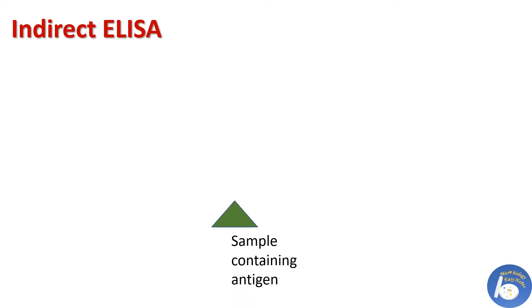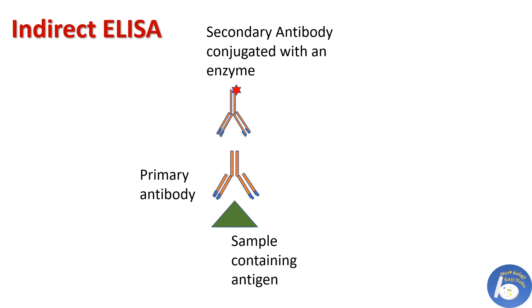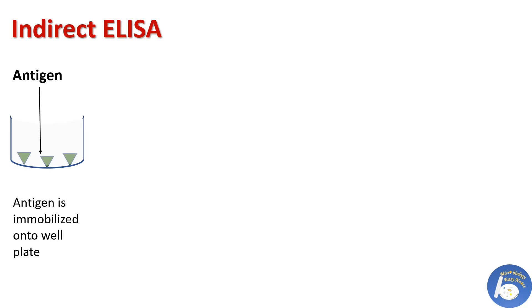Next is indirect ELISA. In indirect ELISA, the antigen and antibody complex formation is detected by a secondary antibody which is linked to an enzyme. Because we are taking the help of a secondary antibody, it is known as indirect ELISA. Using a coating buffer, antigen is first immobilized on the well plate, then after a washing step, the patient sample containing antibody is added.